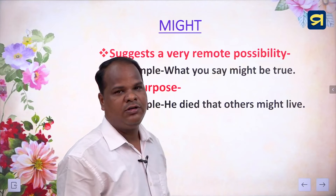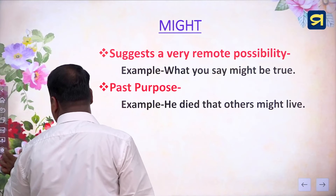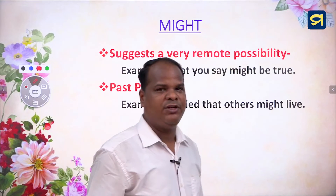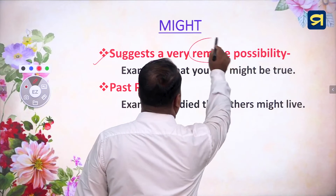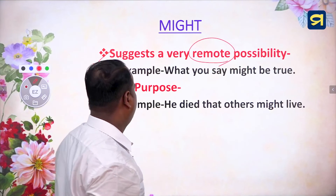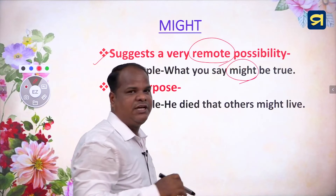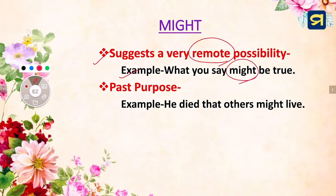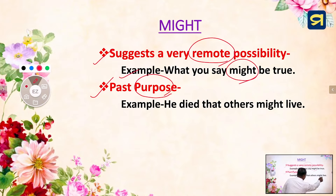Let's know about the use of might modal verb. First, might modal verb can be used in the sense of suggesting a very remote possibility. Dear children, let's have an example: 'What you say might be true.' This is the example of remote possibility. Again, past purpose. We can use might modal in the sense of past purpose. Example: 'He died that others might live.' This is the right example.